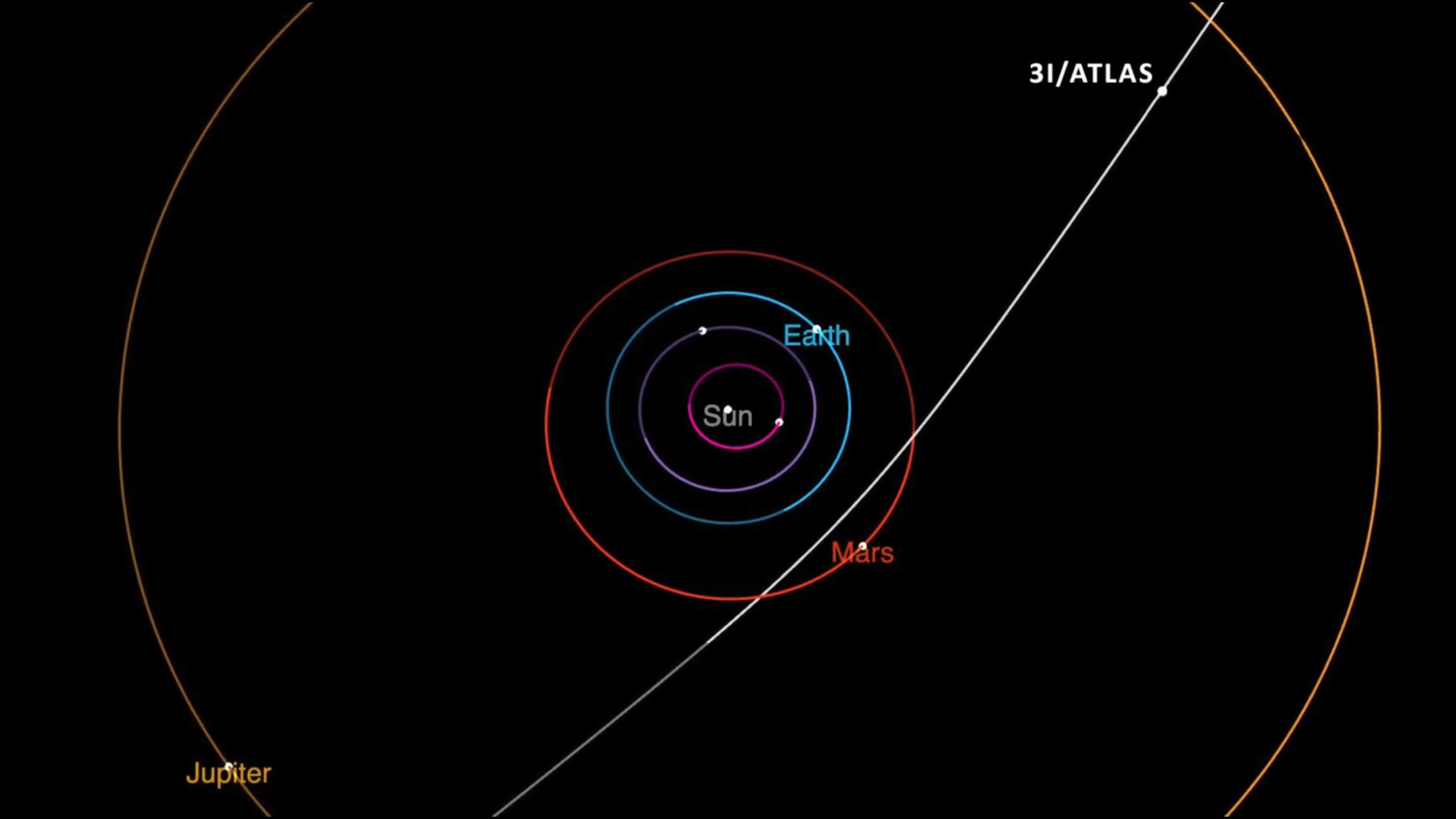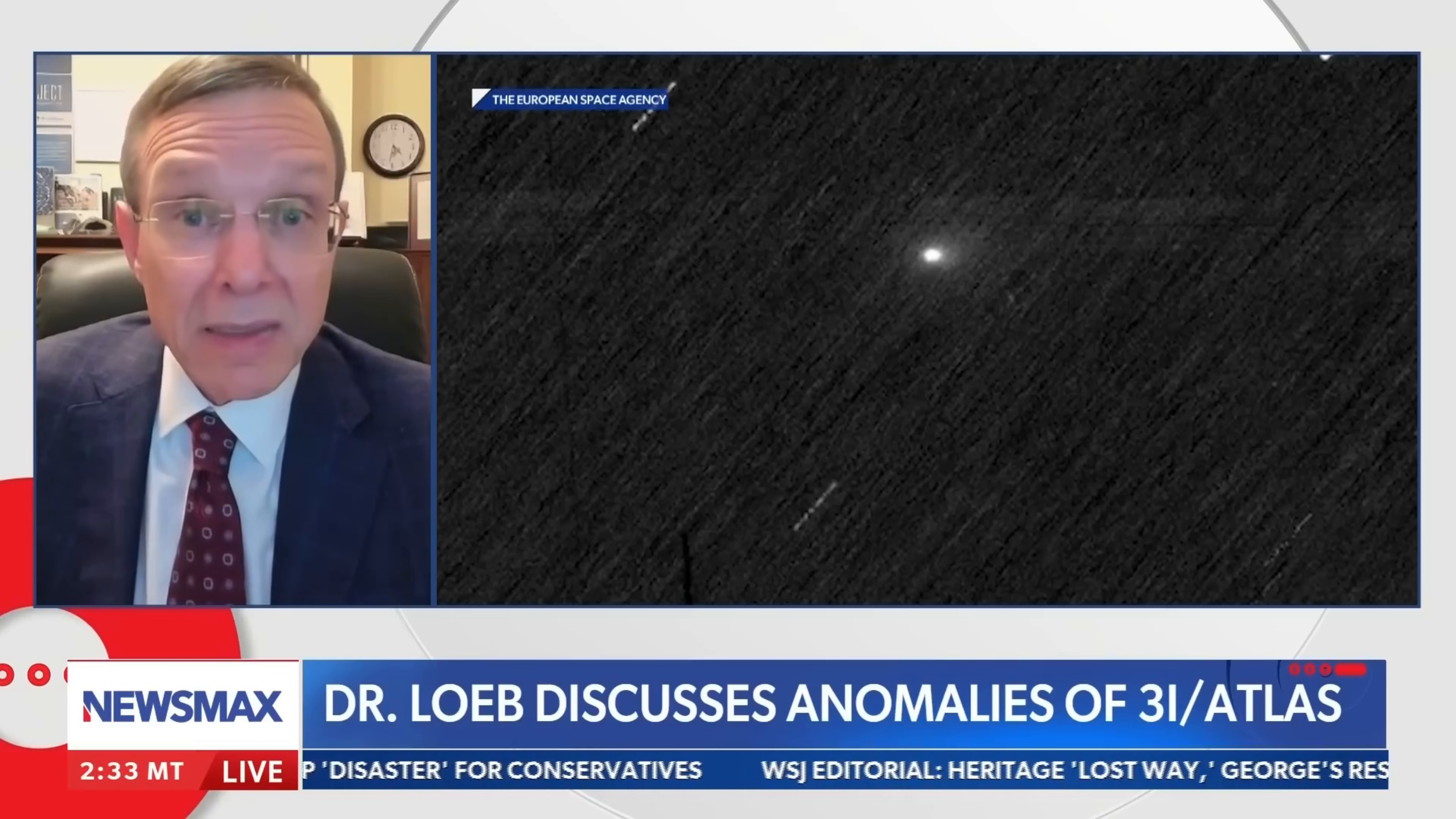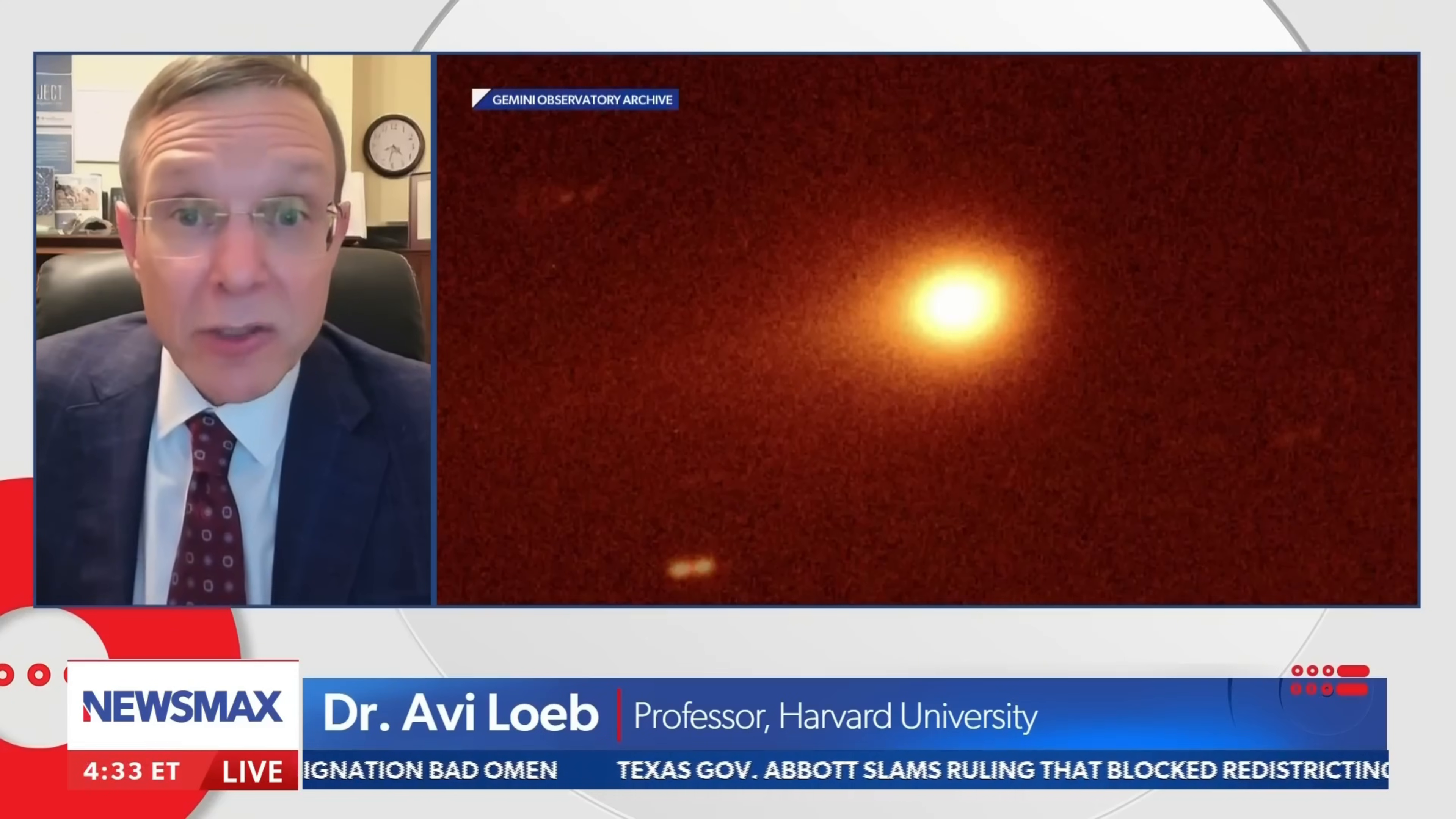The peculiarities surrounding 3I Atlas have made it a subject of intense scrutiny since its detection. Beyond the scientific curiosities surrounding an interstellar object, Avi Loeb, a prominent scientist, has meticulously catalogued the anomalies that distinguish 3I Atlas from anything previously observed. These anomalies have fueled speculation that it may not be just a simple comet, but something much more extraordinary, something that demands further investigation.